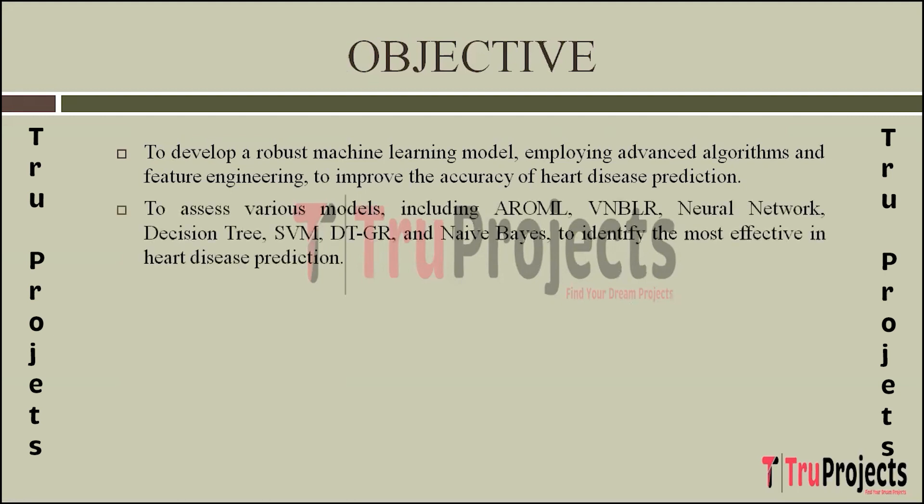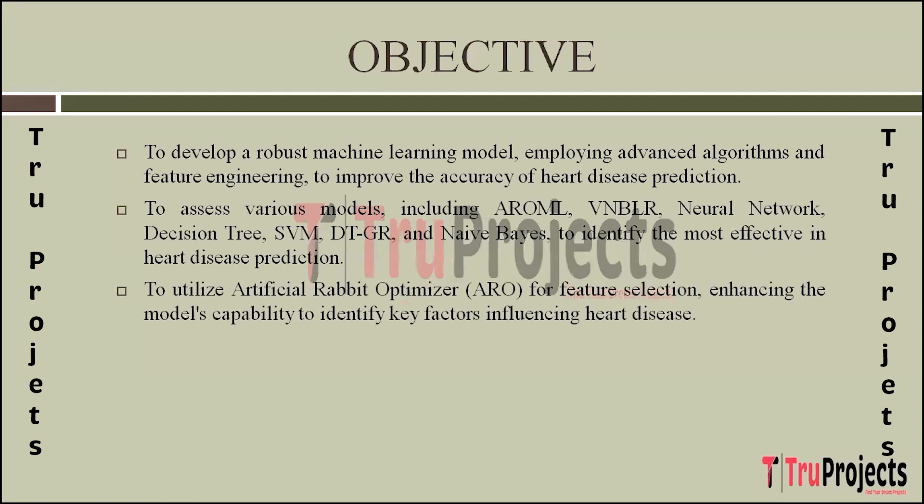The aim is to evaluate the performance of a variety of machine learning models, namely Artificial Rabbits Optimizer with machine learning voting classifier combining Naive Bayes and Logistic Regression, Decision Tree with Gradient Boosting, Naive Bayes, etc. This comprehensive analysis aims to identify the most effective model for accurately predicting heart disease based on the dataset.